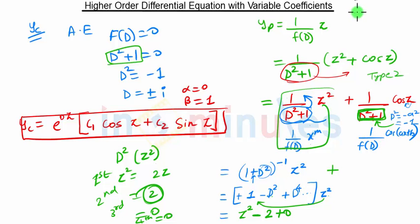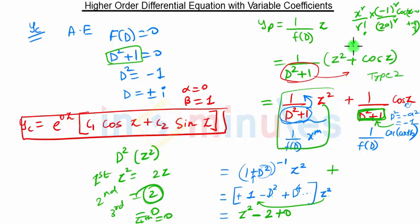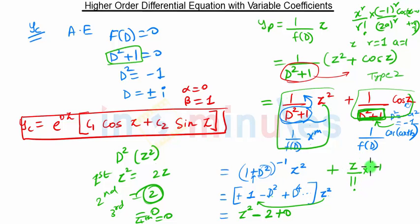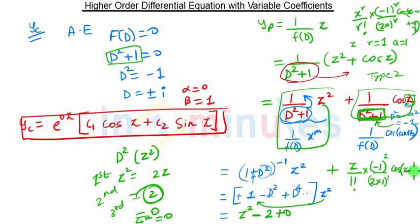Whenever the denominator becomes 0, we use the alternate formula: z^r / (r! · (-1)^(r/2) · (2a)^r) · cos(az + b + rπ/2). In our case r = 1 and a = 1, so the formula becomes z^1 / (1! · (-1)^(1/2) · 2·1) · cos(z + rπ/2).